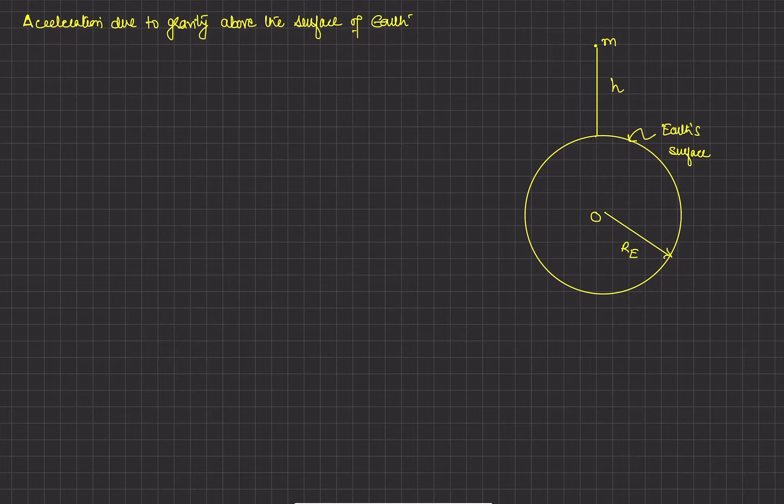So consider a point mass m at a height h above the surface of earth of radius r_e. Since the point is outside the earth, its distance from the center of earth is r_e plus h. This distance is r_e plus h.